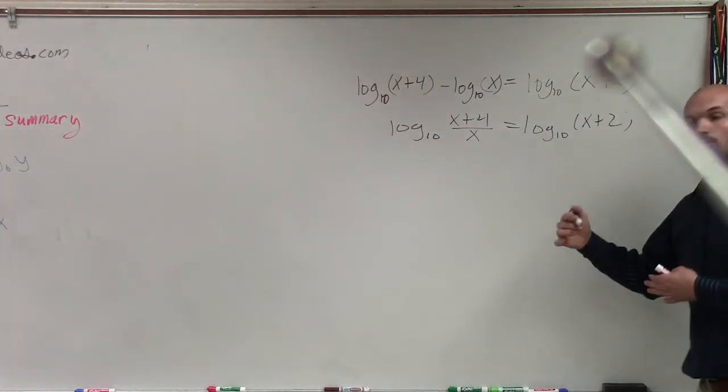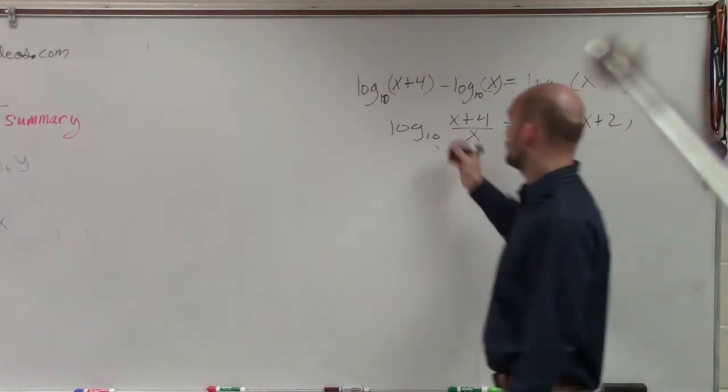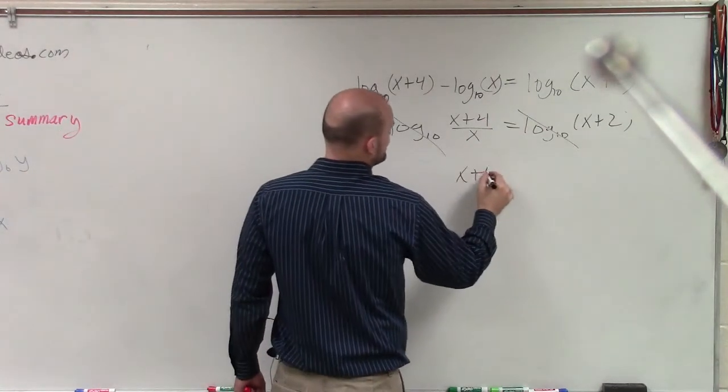Now we can apply our one-to-one property. We have a logarithm equal to another logarithm. So therefore, we know that what we're evaluating each logarithm for, since the bases are the same, are going to be equal.